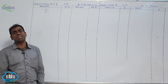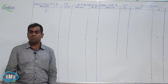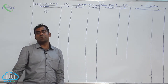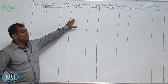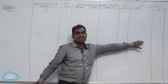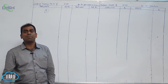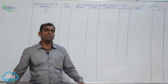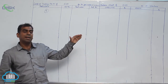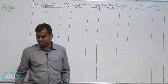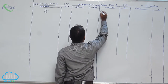Moving on to the adjustments: closing stock goes on the trading account credit side and the balance sheet asset side. Next, interest on capital at 9%. I will show this adjustment on the board — we write capital, and the amount of capital here is sixty thousand.